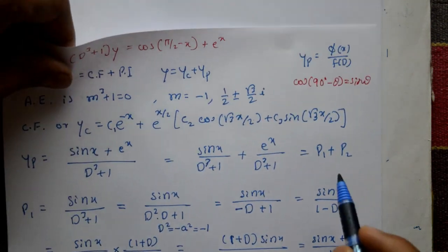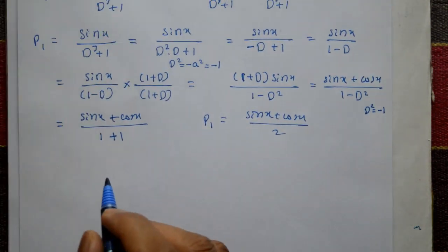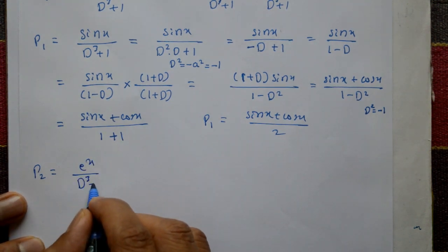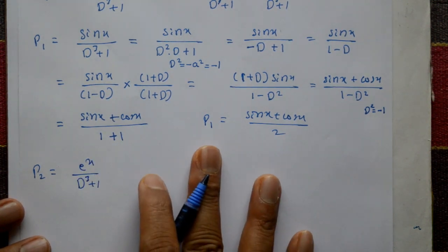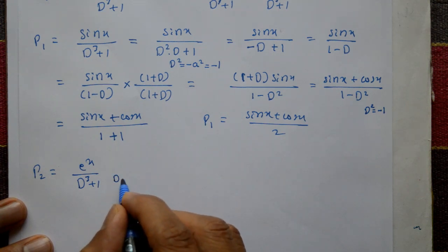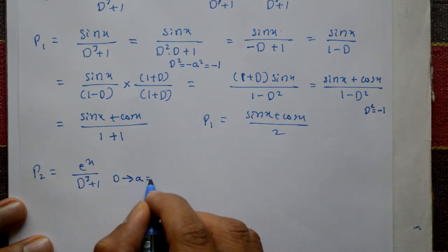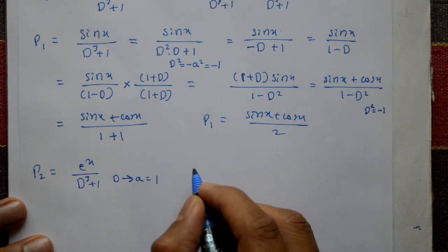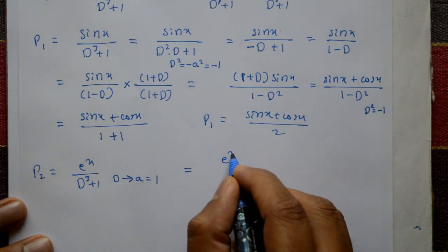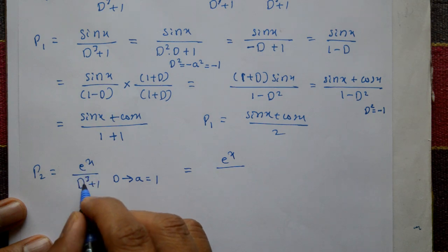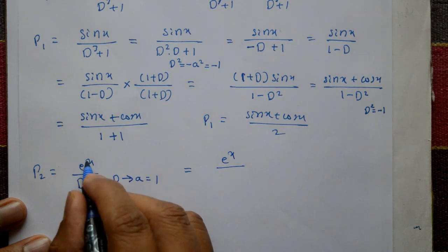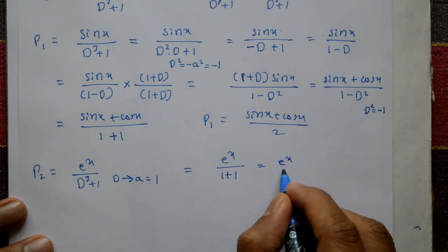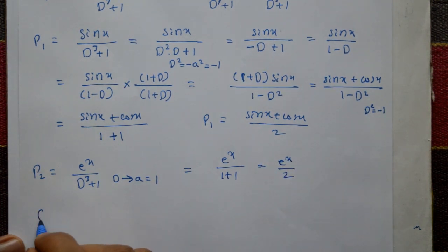Now go to P2. P2 = eˣ / (D³ + 1). This is Type 1, where we substitute D = a = 1. So P2 = eˣ / (1³ + 1) = eˣ / (1 + 1) = eˣ / 2.